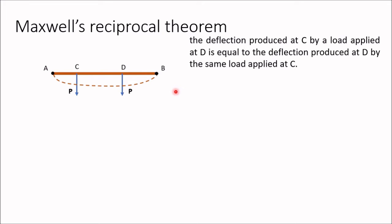Due to these two loads, the beam will deflect. Deflection X1 consists of deflection of C because of the first load plus deflection of C because of the second load. Similarly, X2 is the deflection at point D because of these two forces. We assume deflection is very small and within elastic limit, so deflection is a linear function of applied load and the principle of superposition holds. That means total deflection will be the same irrespective of the sequence in which loads are applied.